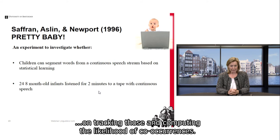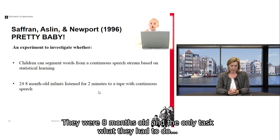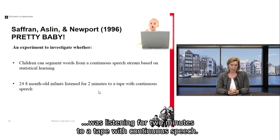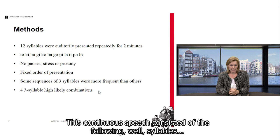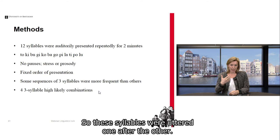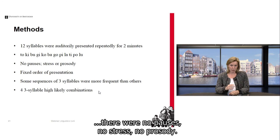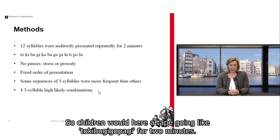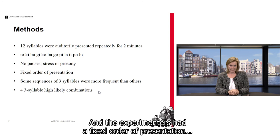The experiment had 24 infants, eight months old, whose only task was to listen for two minutes to a tape with continuous speech consisting of syllables in a fixed order — with no pauses, no stress, no prosody. Some sequences of three syllables were much more frequently presented together than others. For example, 'to-ki-bo' was a fixed combination with a co-occurrence likelihood of one, in contrast to a part-word like 'bo-gi-go', which was less likely statistically.